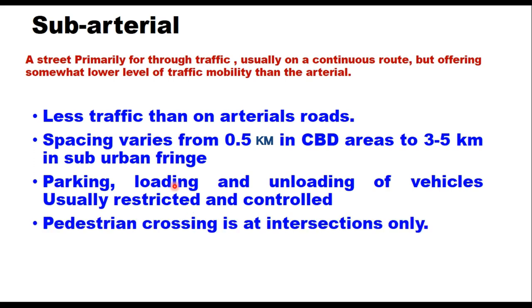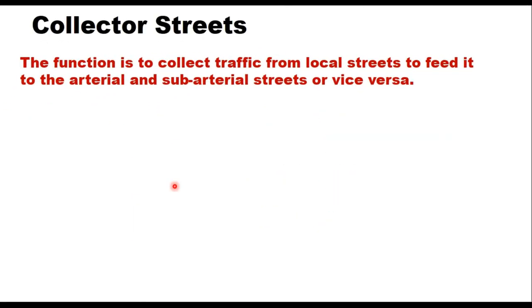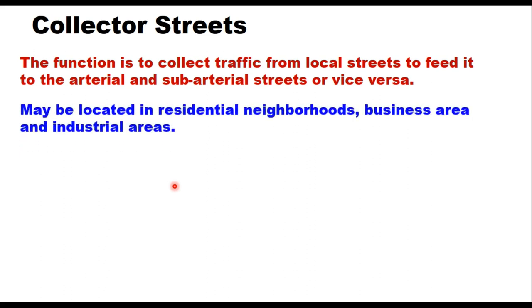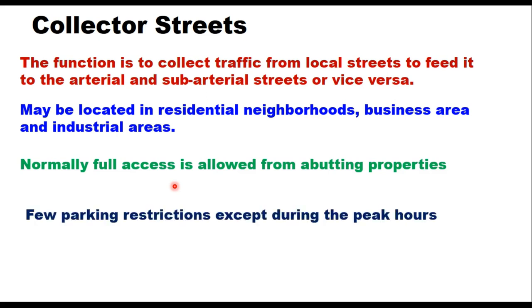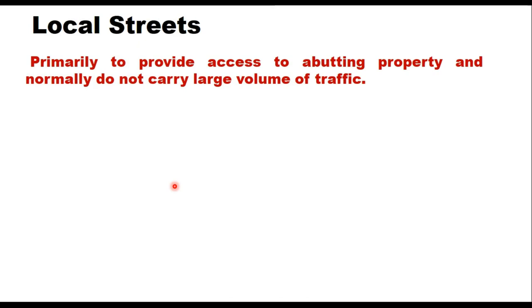Collector streets function to collect traffic from local streets and feed it to the arterial and sub-arterial streets, or vice versa. These may be located in residential neighborhoods, business areas, or industrial areas. Normally, full access is allowed from abutting properties, with few parking restrictions except during peak hours.